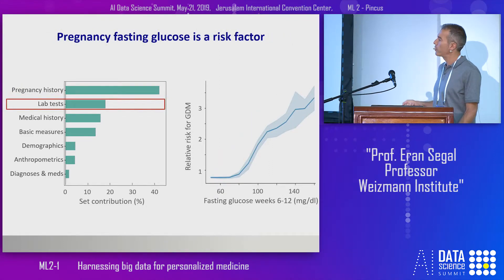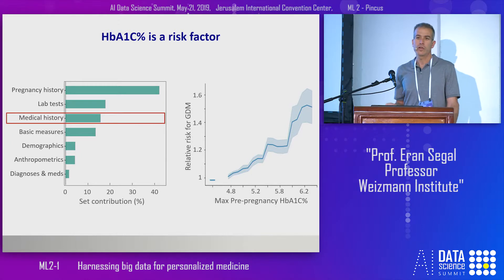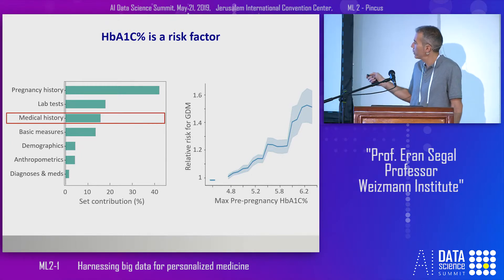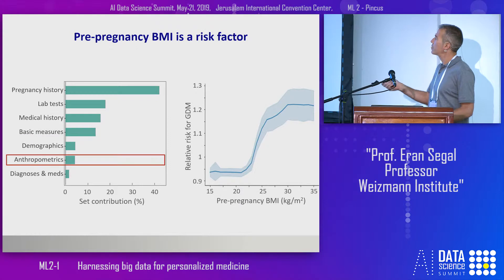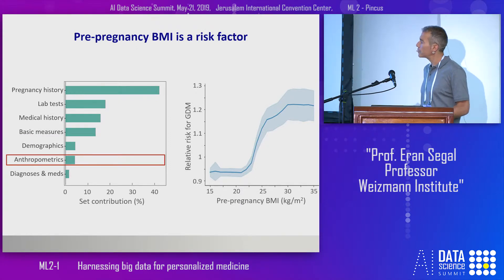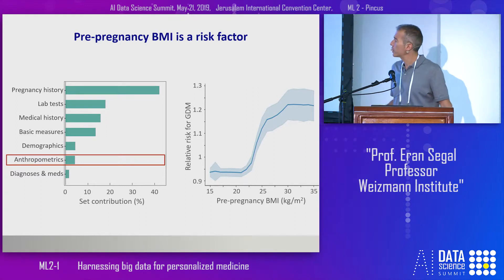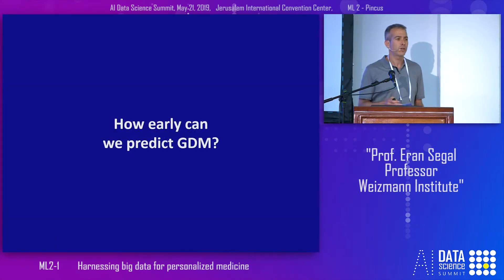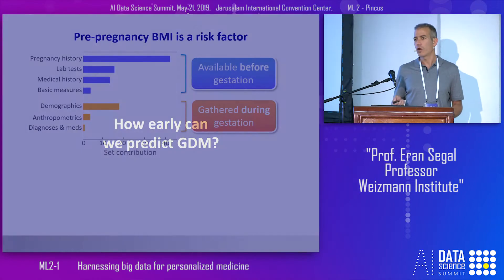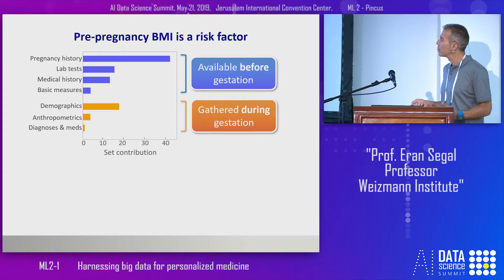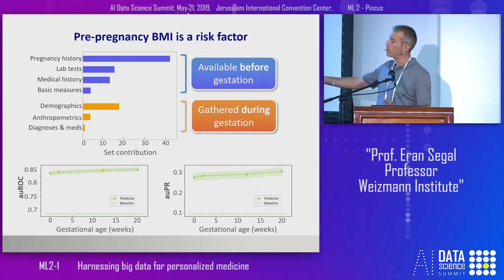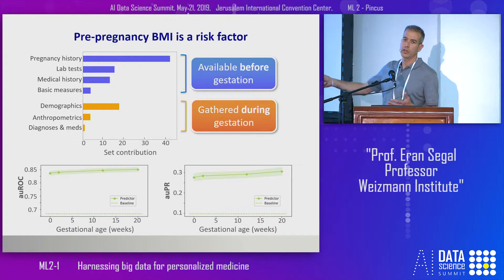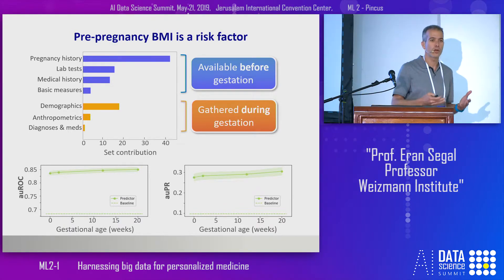After that, we have various lab tests from the current pregnancy like fasting glucose, then measures from medical history like hemoglobin A1C, the number of relatives with diabetes, and BMI before pregnancy. This provides a lot of insights into features driving the model predictions. When we looked at these features, we saw that many are available even before gestation. So we asked how early we can actually predict GDM — and very nicely, predictions even before gestation were nearly as good as predictions obtained after adding information from the pregnancy itself.